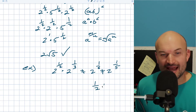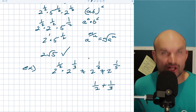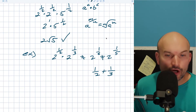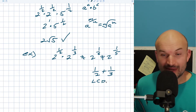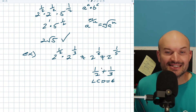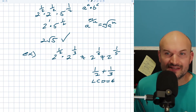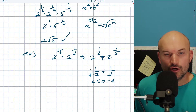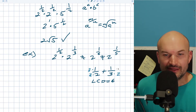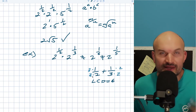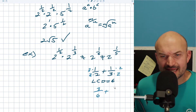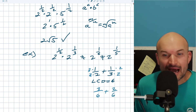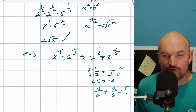So if I have 1 half plus 1 third, I need to find the smallest number that 2 and 3 evenly divide into. Hopefully you recognize that the least common multiple, or LCD, is going to be 6. I need to obtain a 6 in both fractions. On the left-hand side I multiply by 3 over 3, and on the right-hand side I multiply by 2 over 2, because that produces equivalent fractions. So I'll have 3 over 6 plus 2 over 6, and adding the numerators gives me 5 over 6.